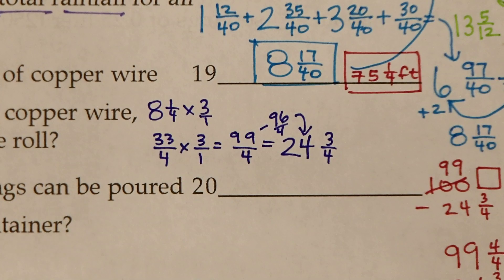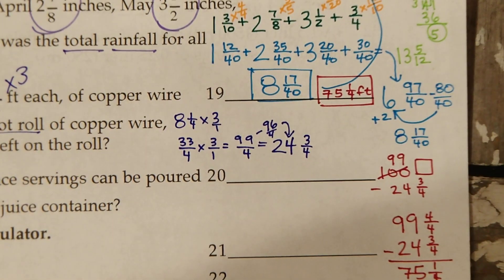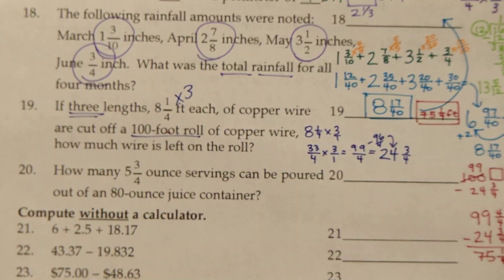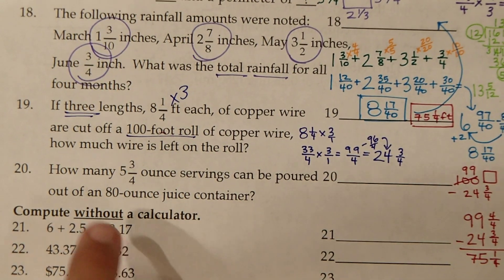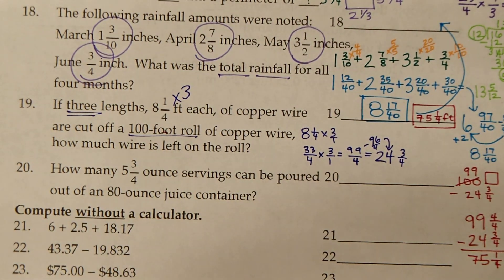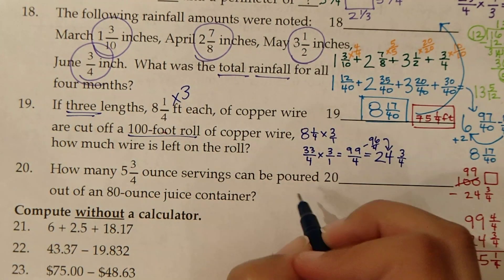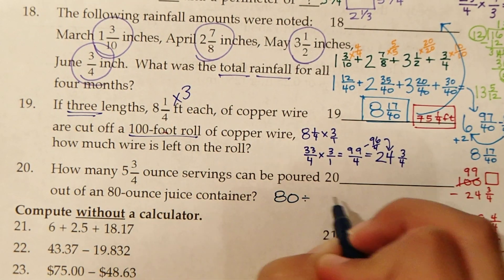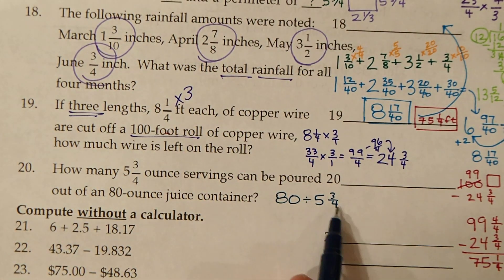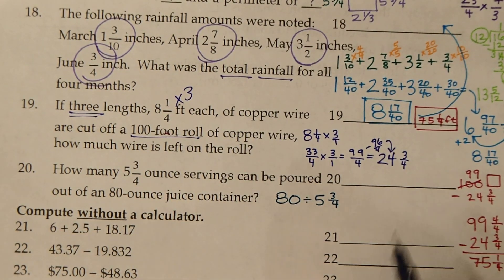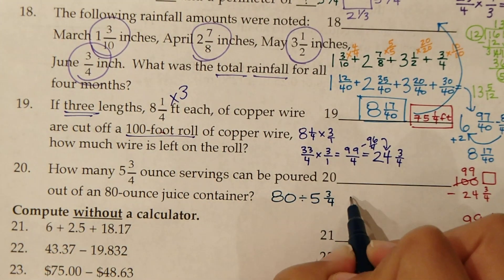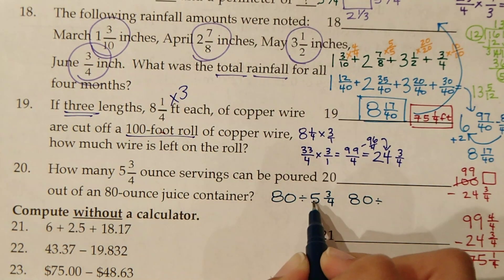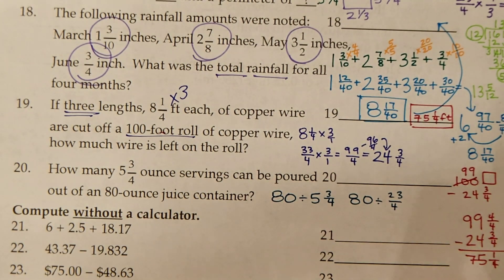Number 20. How many 5 and 3 4ths ounce servings can be poured out of an 80 ounce juice container? We need to see how many of this can fit into this, so we're doing division. 80 divided by 5 and 3 4ths. How many times can 5 and 3 4ths come out of 80? We need to convert this into an improper fraction. This is 80 divided by 4 times 5 is 20, 20 plus 3 is 23 over 4. This is 80 over 1.